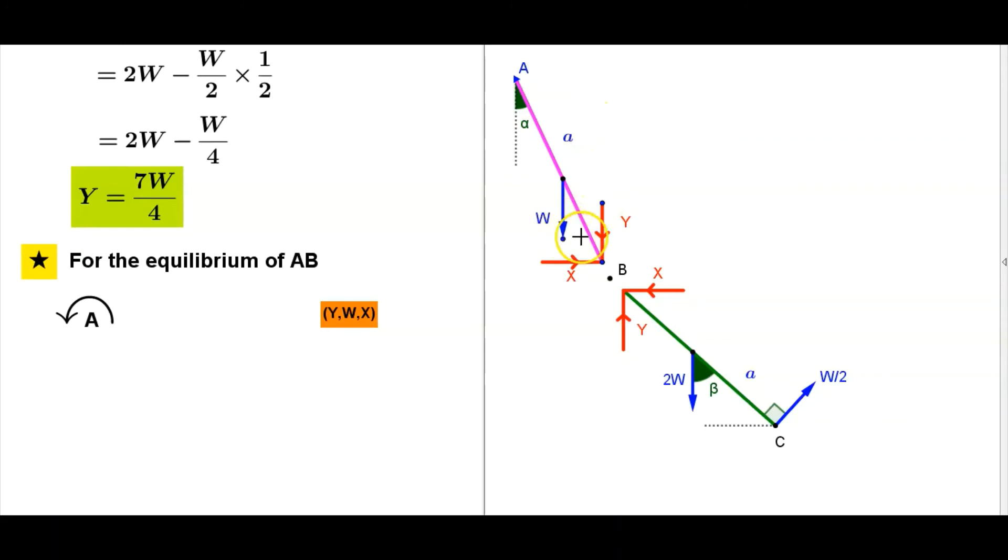Therefore the forces are Y, W, and X opposite direction. So Y times the distance from point A to this Y, that is 2a sin alpha, this distance. This one 2a, this alpha, this one 2a sin alpha.